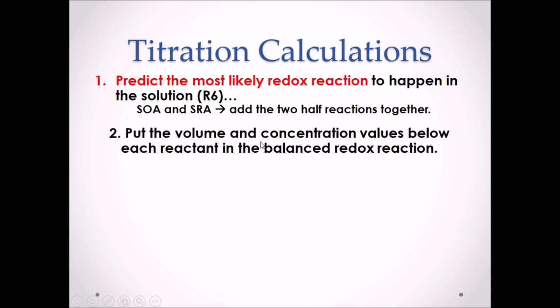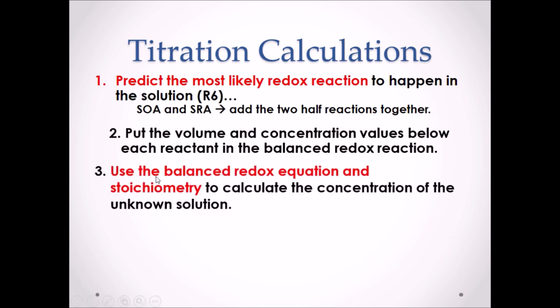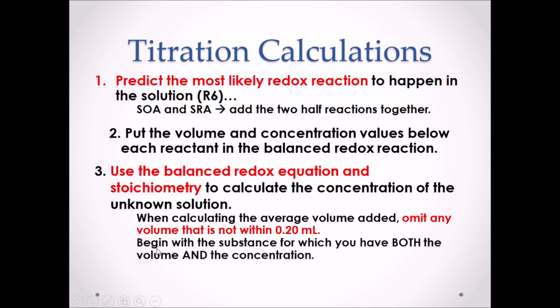Step number 2. Put the volume and concentration values below each reactant in the balanced redox reaction. Step number 3. Use the balanced redox reaction and stoichiometry to calculate the concentration of the unknown solution. Remember, when calculating the average volume added, omit any volume that is not within a 0.20 mL range. And always begin your calculation with the substance for which you have both the volume and the concentration.